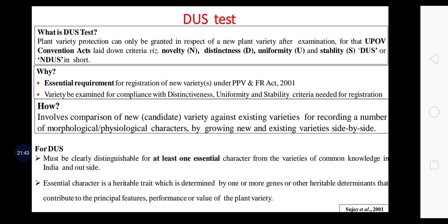Regarding duration of protection under plant varietal testing: 15 years for field crops and 18 years for trees, vines, and related; for extant varieties, 15 years from the date of notification of the variety by the central government under the Seeds Act 1966. Validity of protection is valid only in the country where it has been registered. Protection in other countries can be obtained by filing a separate application in each country. Matters covered under the protection right can be granted for variety of all botanical genera and species. The variety should have a designation as per the rules of international code of nomenclature.